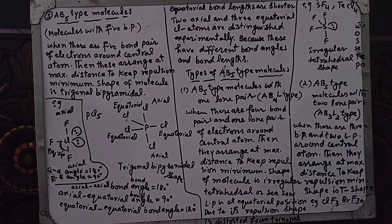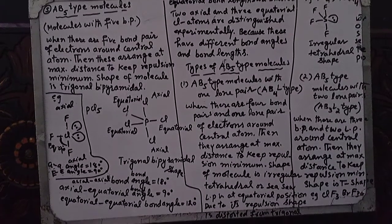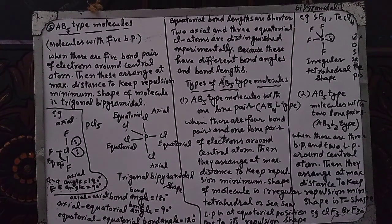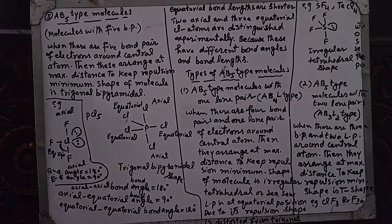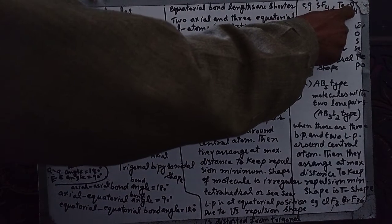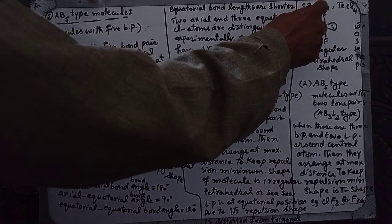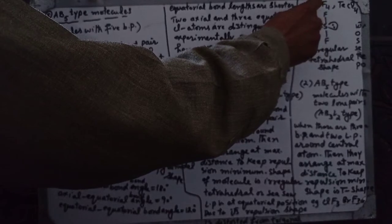Due to the lone pair at the equatorial position and its repulsion, the shape is distorted from the trigonal bipyramidal. The resulting shape is a seesaw or irregular tetrahedral shape. For example, SF4: S is the central atom with F atoms bonded. The similar group includes selenium, tellurium, and polonium compounds.